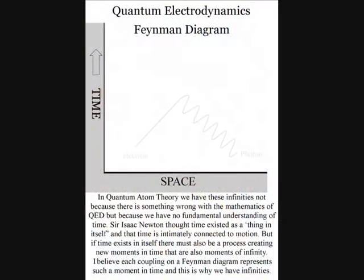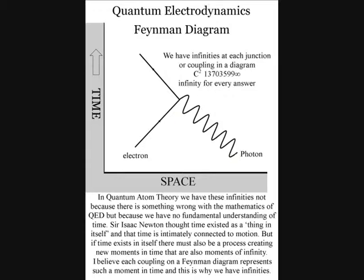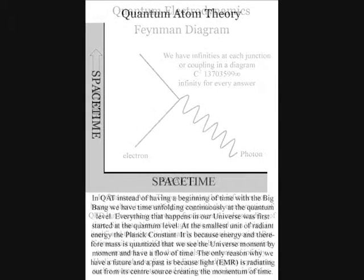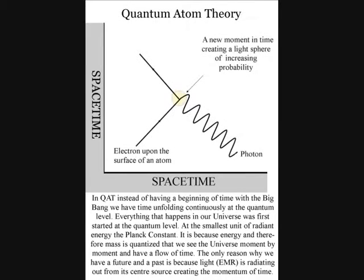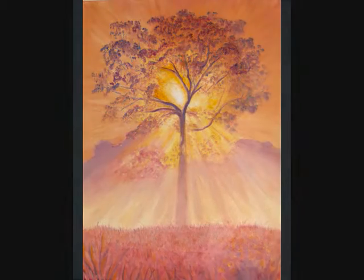This can explain the problem of mathematical infinities in quantum electrodynamics that can only be cancelled out in a process called renormalization. The calculations for each coupling on a Feynman diagram are infinite. In quantum atom theory, these infinities represent the continuous process of the time continuum, creating the infinity of space-time, and therefore there is no need for renormalization.